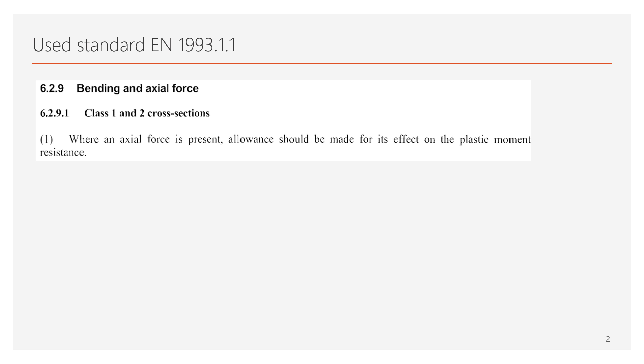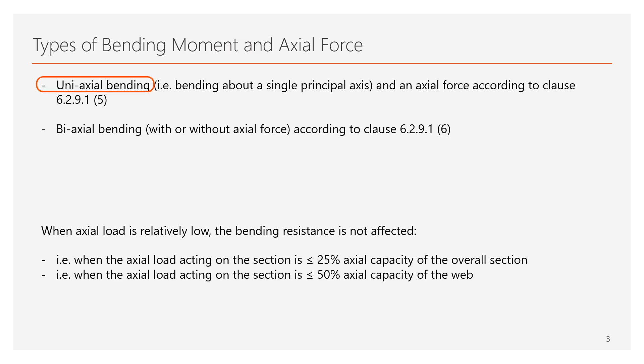This chapter states that when an axial force is present, allowance should be made for its effect on the plastic bending moment resistance. There are two different scenarios possible when bending moment and axial force act together. The first one is when a so-called uniaxial bending and an axial force happen together.